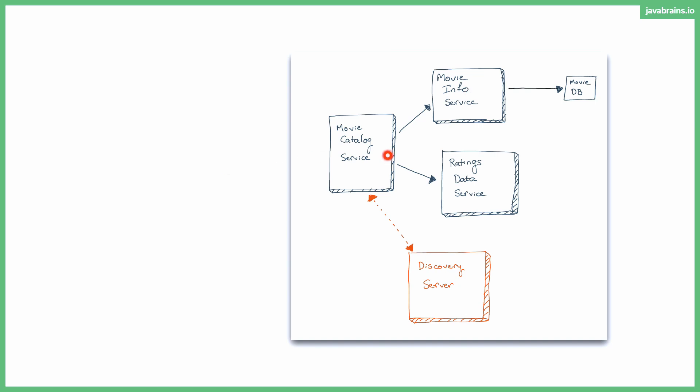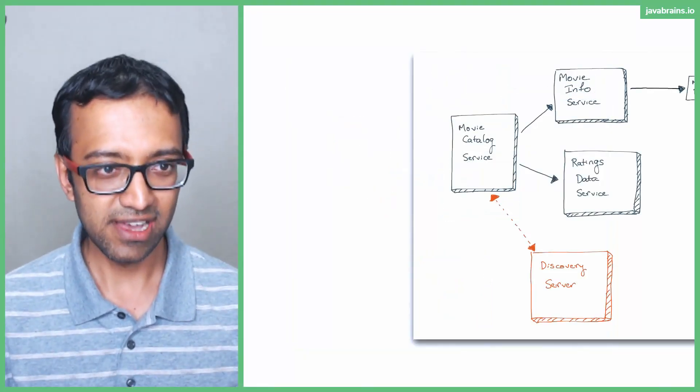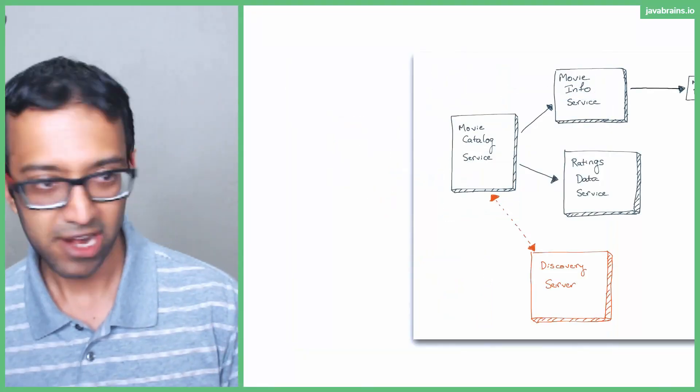Whenever a request comes in and says, hey, give me movieinfo, it's like, nope, I'm not calling that guy. That guy's not listening to me. But when the request comes in for ratings data service, it says, oh, this guy is good. I'm going to call and return. And it's going to keep doing this for a while. And in the meantime, it's going to check, hey, are you still not feeling well? Once it detects that this guy is good, then it's going to continue sending requests. That's basically what the circuit breaker does in the context of microservices.